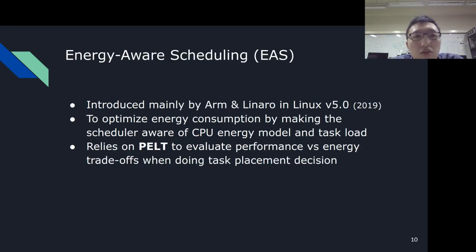Coming up next is Energy-Aware Scheduling, or EAS, introduced mainly by ARM and Linaro in Linux version 5.0. Its advantage is to reduce energy consumption, especially on mobile devices. Without EAS, the scheduler is not aware of the capacity of each processor core, which varies a lot at least on big.LITTLE architecture. The scheduler may in turn choose an inappropriate core for the task — for example, giving an IO-bound task a performance core. It is worth noting that EAS is coupled with PELT; EAS uses information provided by PELT to evaluate performance versus energy trade-offs when making task placement decisions.